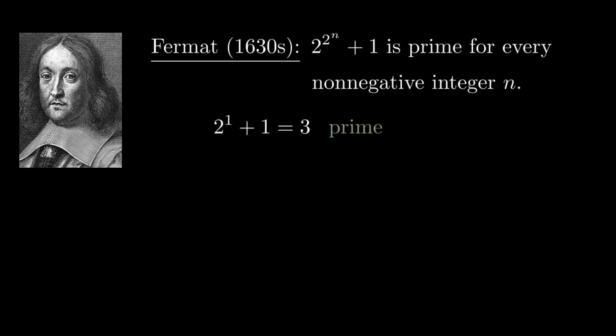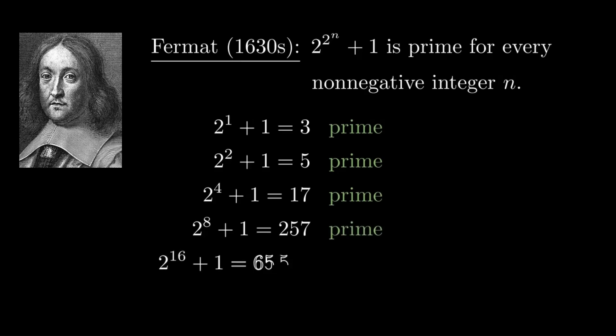You get 3, which is prime. 5, that's a prime. 17, that's a prime. 257, which is prime. And n equals 4 gives 65,537, which is trickier to check, but it's also a prime.